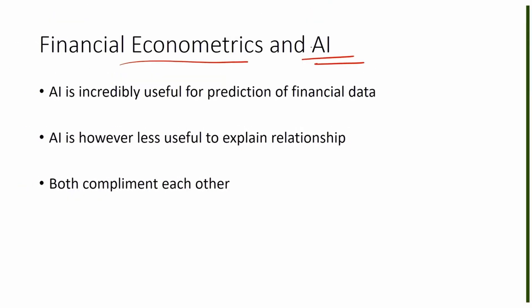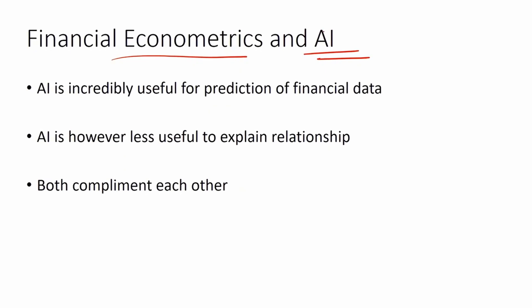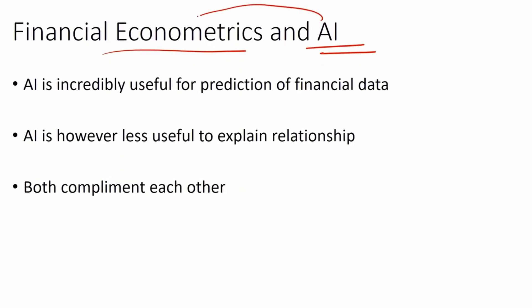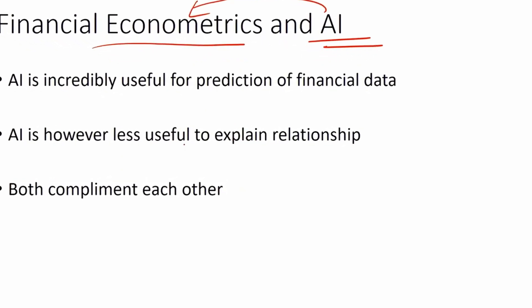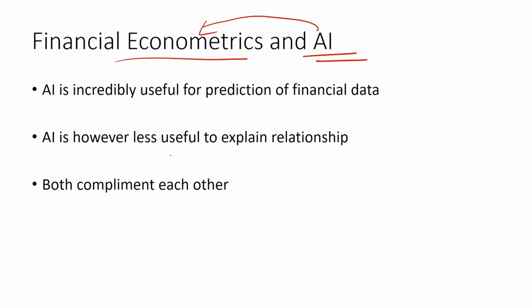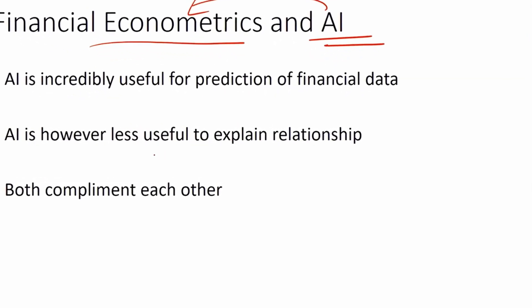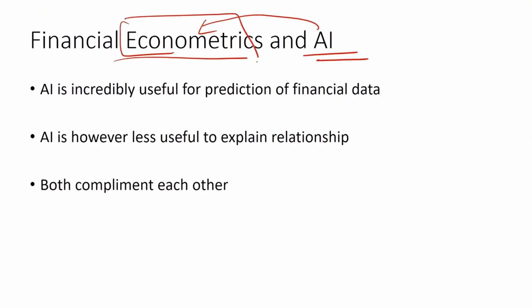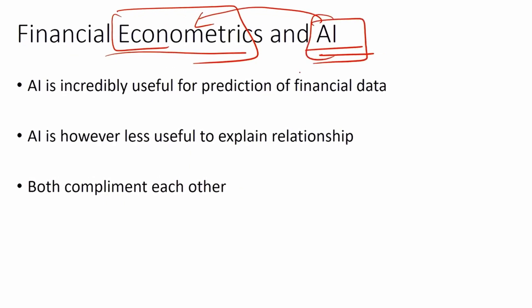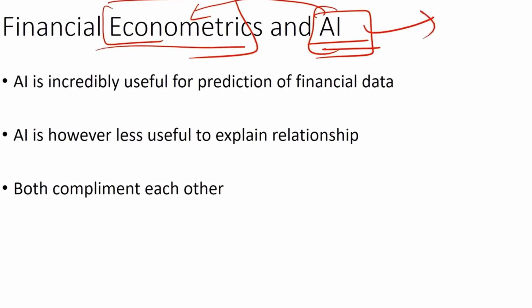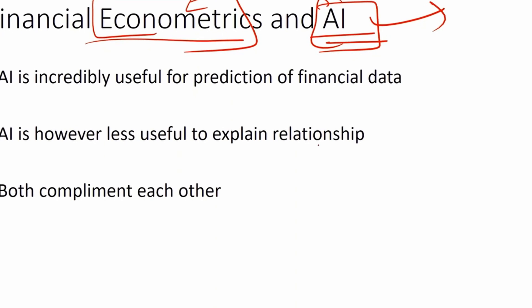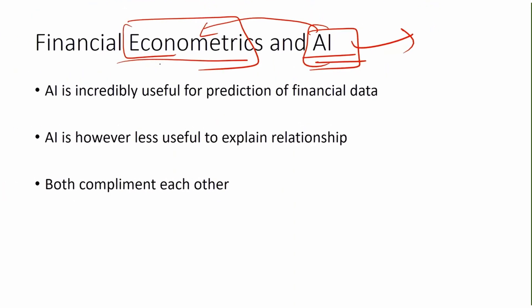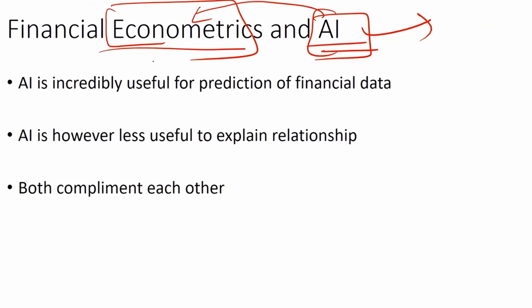There's a very good relationship between econometrics and AI. In fact, when AI was started in the 1960s, a lot of econometricians were actually working on AI or the initial phase of the AI revolution in the world. One difference between econometrics and AI is that where AI is very focused on prediction, econometrics is more focused on finding relationships between variables.